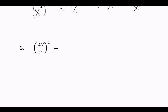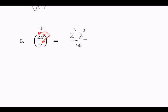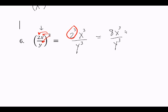Rule number 6: when everything inside parentheses is being multiplied or divided, a power outside the parentheses attaches to each item inside. So (2xy) to the 3rd power gives 2 to the 3rd times X to the 3rd times Y to the 3rd. Since 2 to the 3rd power is 8, the final answer is 8x cubed over y cubed.